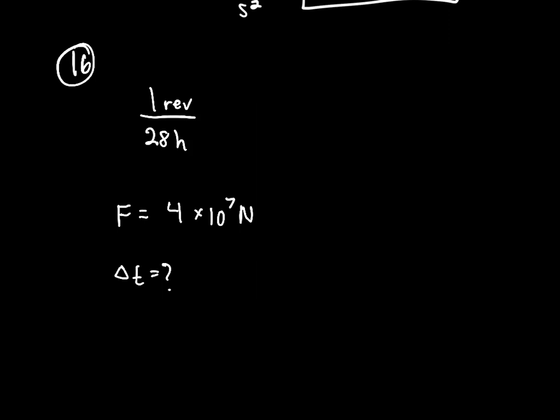First, I should identify what the first number actually is: one revolution per 28 hours. That's a change in position over a change in time — it's a velocity. We want to get it into SI units of radians per second, so that's omega-final. We can also infer omega-initial: one revolution per 24 hours, which is how fast the Earth currently spins.